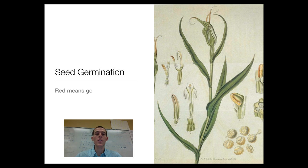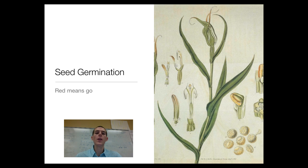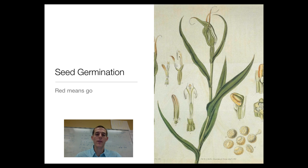Scientists found a very interesting behavior in seed germination. If you hit seeds with varying colors of light — say red, then far-red, then red again, then far-red — they respond to whatever the last pulse of light was. If you hit seeds ready to germinate with red light and then far-red light, they won't germinate. But if you hit them with red, far-red, then red again, they will germinate. Plants respond to the last color of light they were exposed to, making seed germination one of our light-regulated responses.